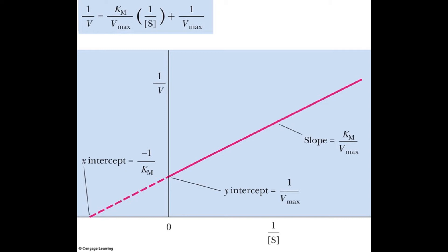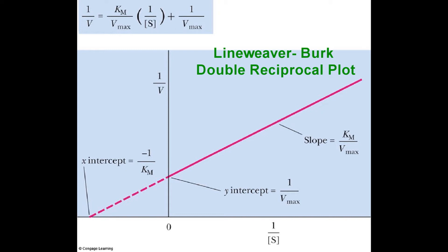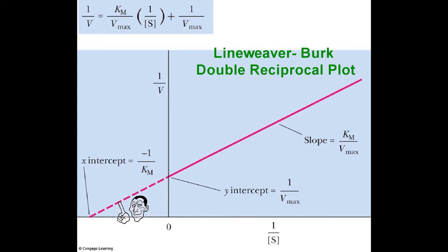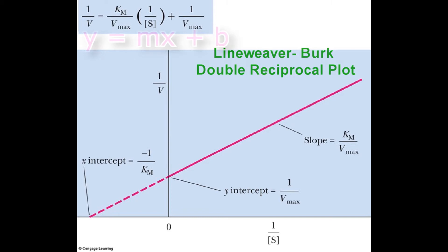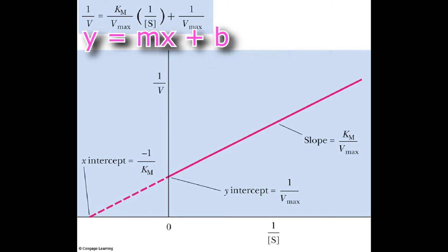We're going to invert the numerical value of each data point. We call this a Lineweaver-Burk plot. We get a straight line. All the points are in the positive quadrant because we can't have a negative concentration of substrate, but you can draw a hypothetical line and extrapolate from your known data to get the Km at the X intercept. If an enzyme binds multiple substrates, it's going to have multiple Km values. Taking the reciprocals gives us the formation of a straight line equation, Y equals MX plus B — this is the Lineweaver-Burk double reciprocal plot.